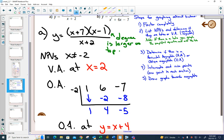And if you wrote your division statement, your answer would be x plus 4 with a remainder of negative 5, but for the oblique asymptote, you can ignore the remainder. Whatever you get as the equation becomes your oblique asymptote.